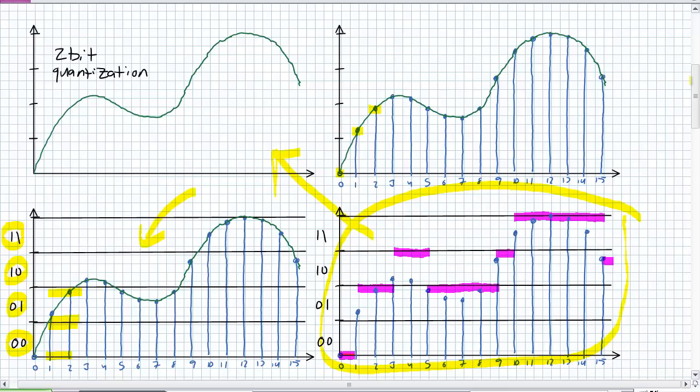So how are we going to improve that? What we're going to do is increase the granularity. How are we going to do that? Increase the number of bits. What we'll do is do a three-bit quantization. And a word about range for this. This is the same analog signal.